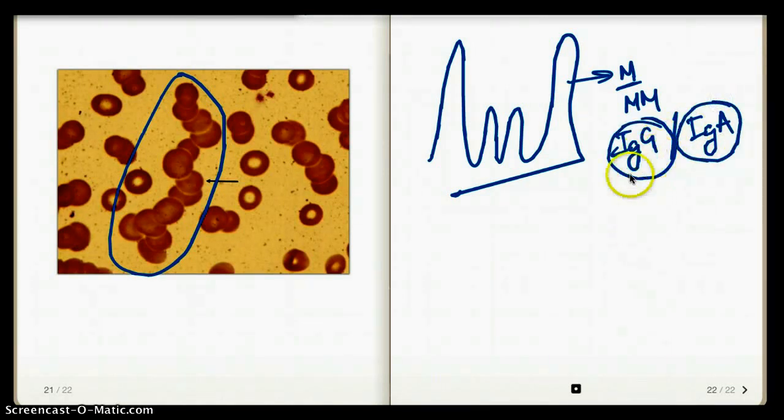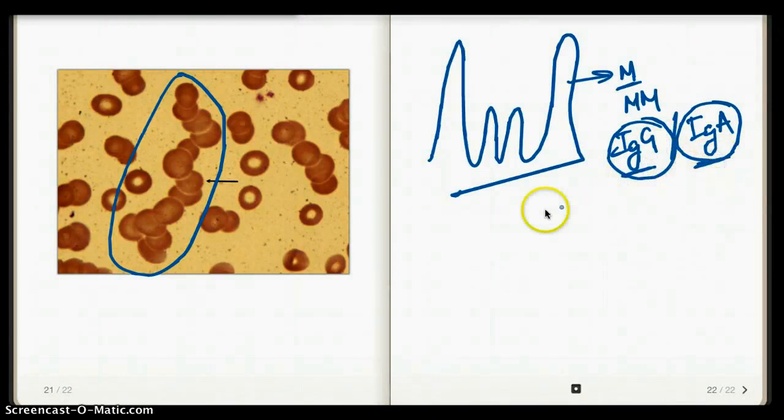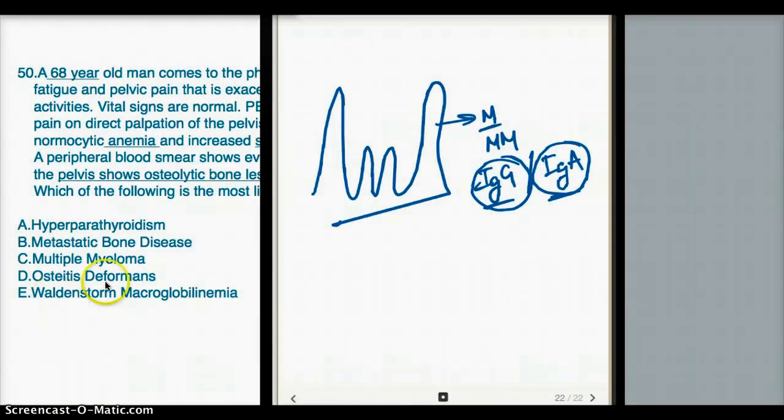But the point is it's usually IgG or IgA. Where we're talking about Waldenstrom macroglobulinemia, we're usually going to have the M spike is usually going to be due to an IgM. So both of them, you might get confused.